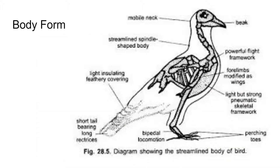First is their body form. They usually have what is called a spindle shape with four distinct divisions: their head, their neck — which is typically very distinct in birds, some having very long necks — their trunk, which is their midsection, and then their tail. Necks are usually elongated and have that kind of S-shape, where you could trace an S from the beak.